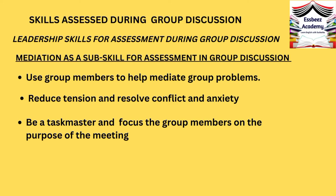You can have greater chances to qualify a group discussion if you understand the unofficial roles group members take during the course of the discussion and use them to solve group problems. For example, the role of the tension reducer is to resolve conflict and anxiety, while the taskmaster helps to focus the group members on the purpose of the meeting. Try to use the group's tension reducer to assist in soothing feelings when participants feel their ideas were not given equal consideration. Similarly, use the group's unofficial taskmaster to keep easily distracted members focused on the agenda, thus displaying effective managerial skills.